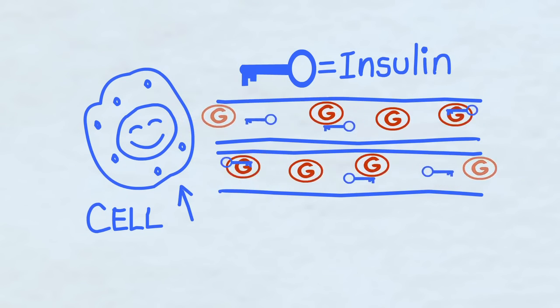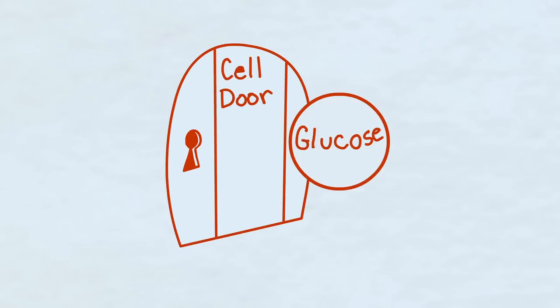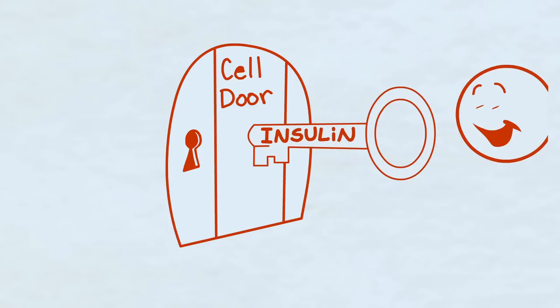and how well the cells can use it. The cells have these little doorways in them that the glucose must use to get into the cell, but glucose can't get in without a special key, and that key is insulin.